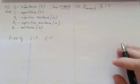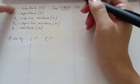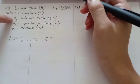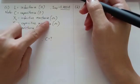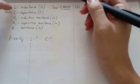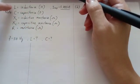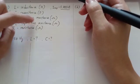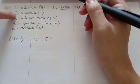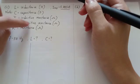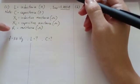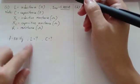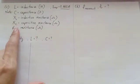Part C asks for inductance and capacitance. Note the difference: inductance is big L, unit Henry; inductive reactance is XL, unit ohm. Capacitance is big C, unit farad; capacitive reactance is XC, unit ohm. Resistance R is also in ohms. The question asks for L and C — not XL and XC.